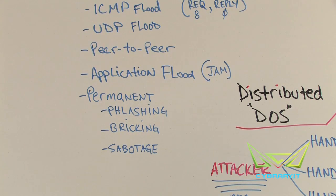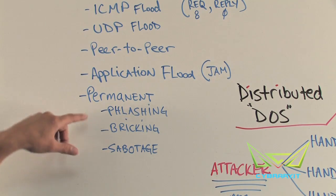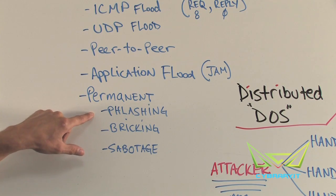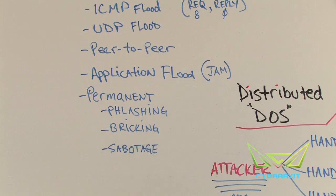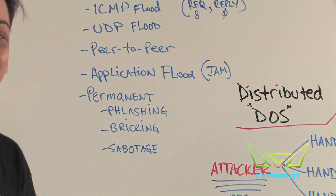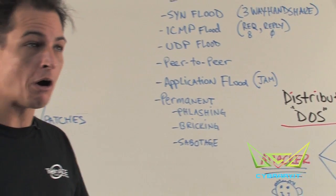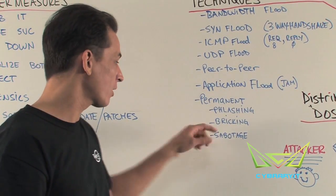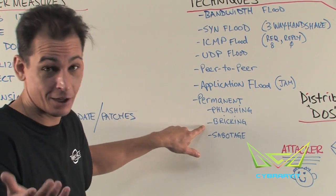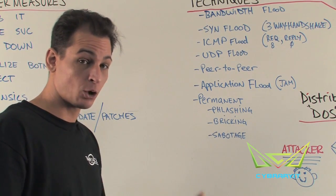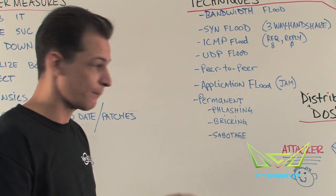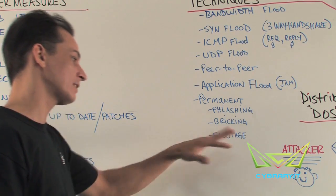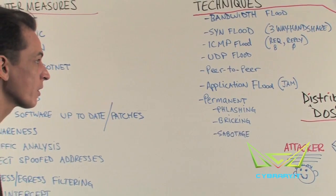More permanent techniques include phlashing — for example, a website offers a critical update, you download and install it, and it renders your system useless. This is closely related to bricking a device: if you install the wrong firmware update on an Android phone trying to get root access, the firmware is corrupted and the phone becomes a useless brick. Another category is sabotage, which can be physical or software-based.